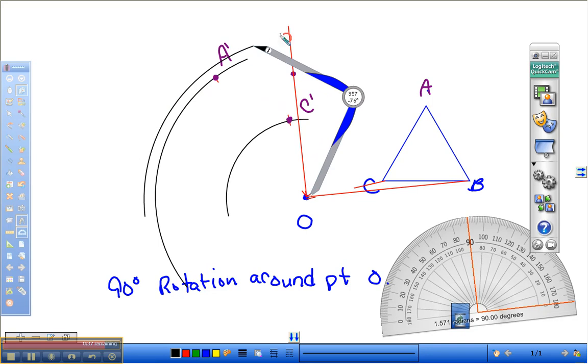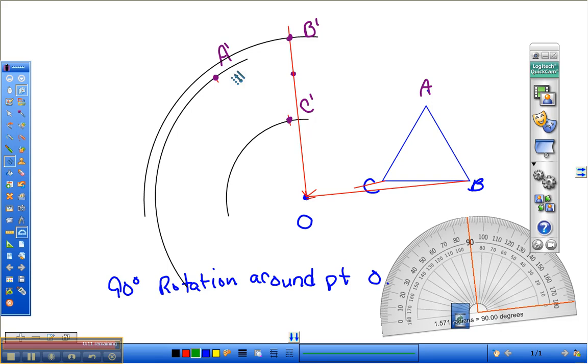And the last thing we just have to do is draw our brand new triangle. Let's make it a nice green triangle. We'll go from point A to B, A to C prime, and B prime to C prime.